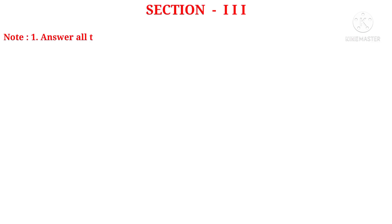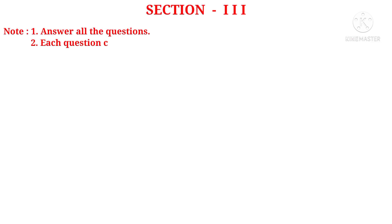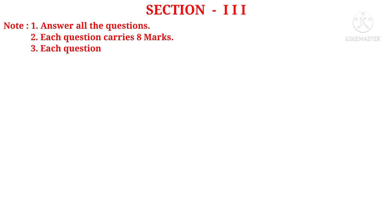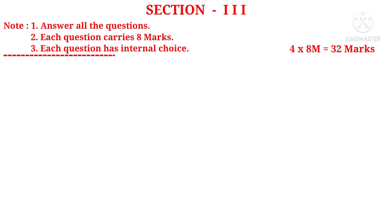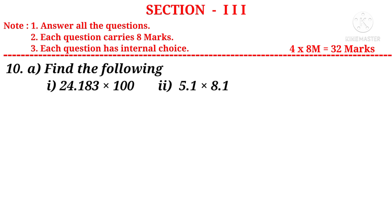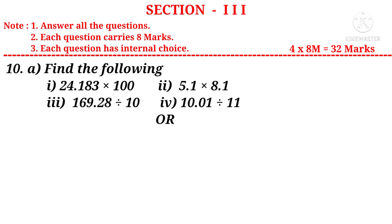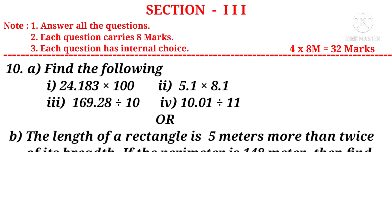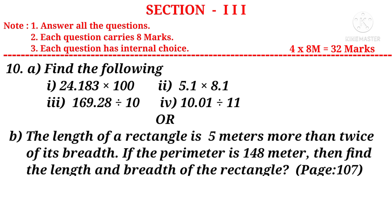Now let us take Section 3. Answer all the questions. Each question carries 8 marks and each has an internal choice. There are 4 questions, so 4 into 8 marks is 32 marks. Question 10A: Find the following — 1) 24.183 into 100, 2) 5.1 into 8.1, 3) 169.28 divided by 10, 4) 10.01 divided by 11. It is a question from the chapter Fractions and Decimals.